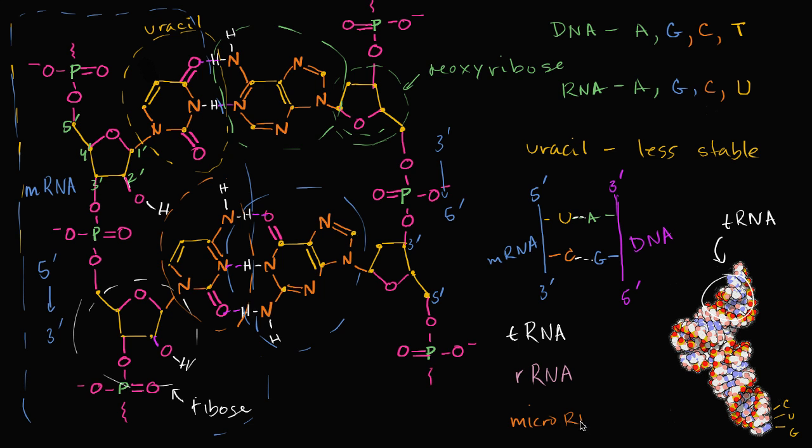And you also have things called microRNA, which are short chains of RNA, which could be used to regulate the translation of other RNA molecules.